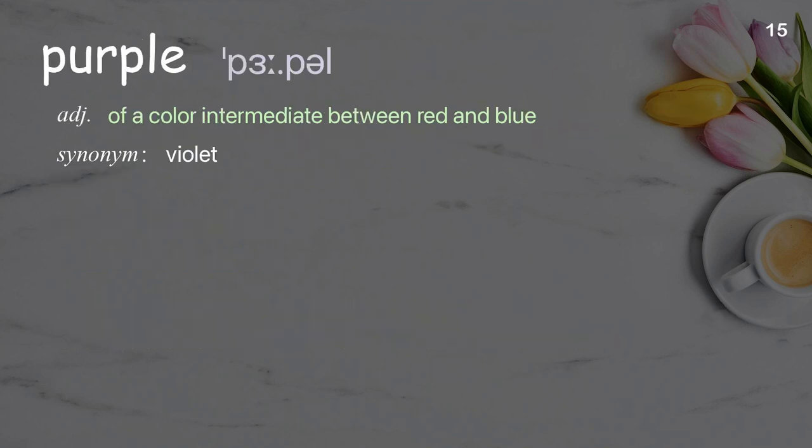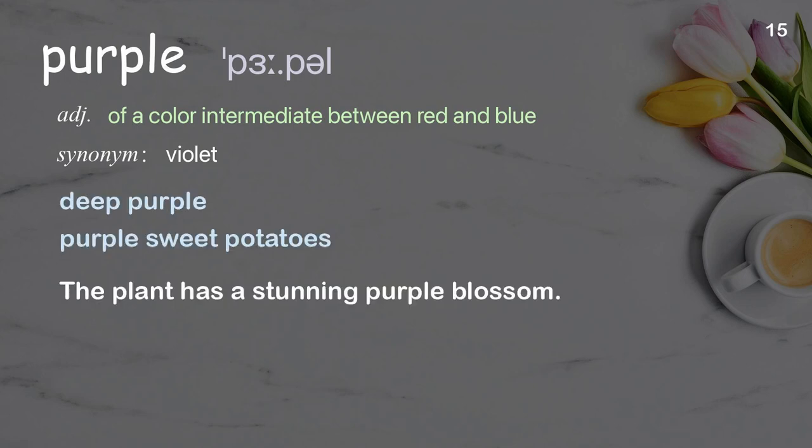Purple: of a color intermediate between red and blue. Examples: deep purple, purple sweet potatoes. The plant has a stunning purple blossom.